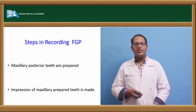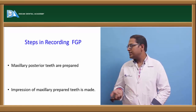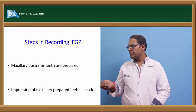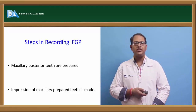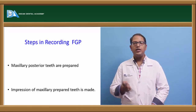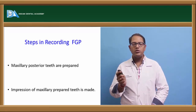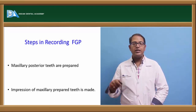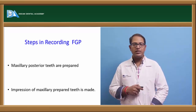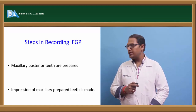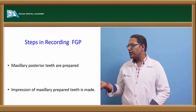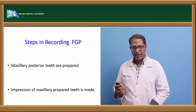Steps in recording FGP: first, maxillary posterior teeth are prepared. When FGP comes into picture, anteriors are prepared first — crowns are done for maxillary and mandibular anteriors. Then the mandibular posterior is done, and then the maxillary posterior. When the maxillary posterior teeth are prepared, an impression of the maxillary prepared teeth is made.